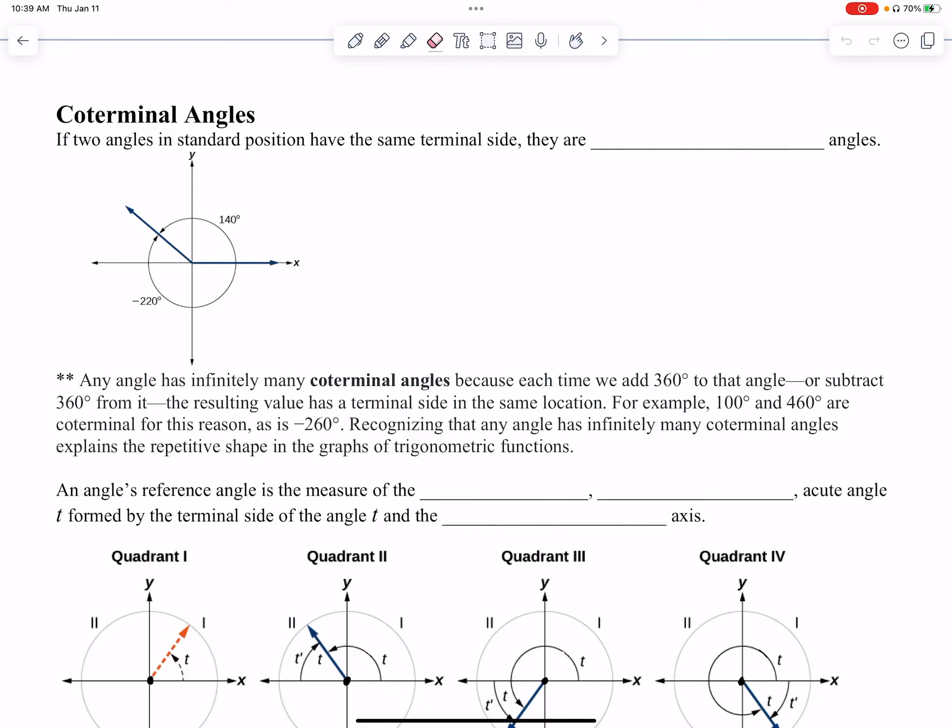In this video, we'll discuss what are called coterminal angles. If two angles in standard position have the same terminal side, they are coterminal angles.